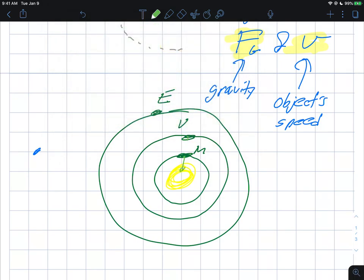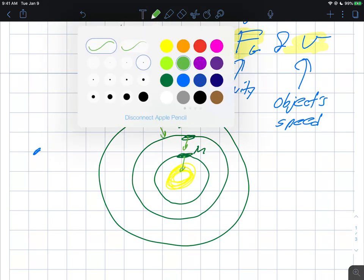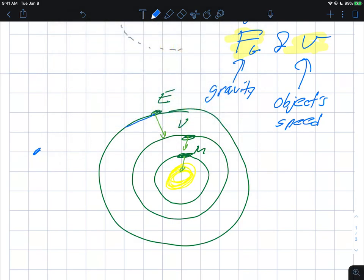All of them have an inwards pull due to the sun, but all of them also have their speed going in this counterclockwise direction. There's a velocity of the Earth, there's a velocity of Venus, there's a velocity of Mercury. All of them have this speed,